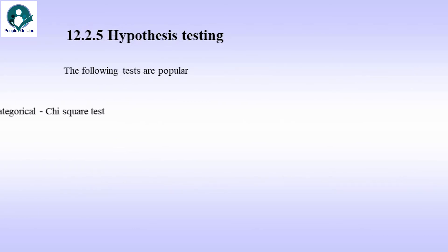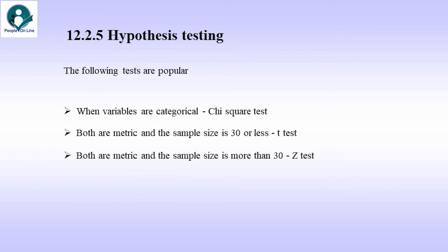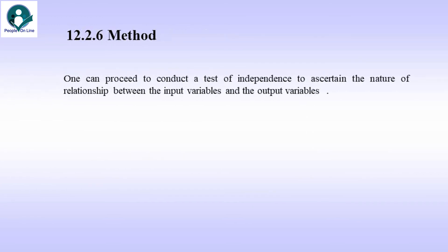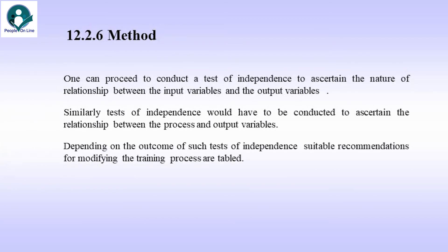The following tests are popular: when variables are categorical, the chi-square test; when both variables are metric and the sample size is 30 or less, the t-test; and then the z-test. One can proceed to conduct a test of independence to ascertain the nature of the relationship between the input variables and output variables. Similarly, tests of independence would have to be conducted to ascertain the relationship between the process and output variables. Depending on the outcome of such tests, suitable recommendations for modifying the training process can be tabled.